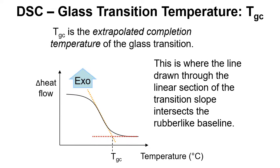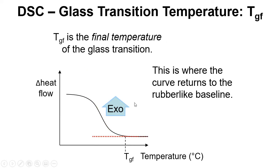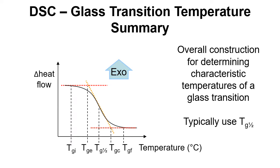TGC, extrapolated completion temperature for the glass transition, so very similar idea to what we had before. We've got the tangent drawn in and we look at where that crosses the baseline. And then finally TGF, the final temperature of the glass transition where the curve goes back to the baseline. A bit of a summary there, typically we'd use TG a half.